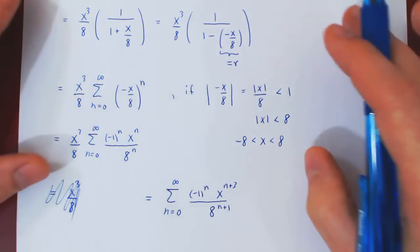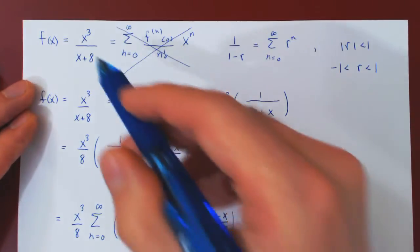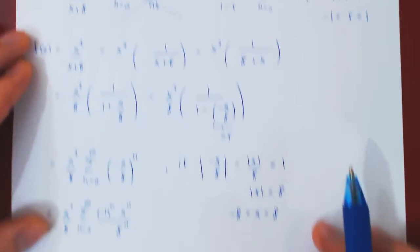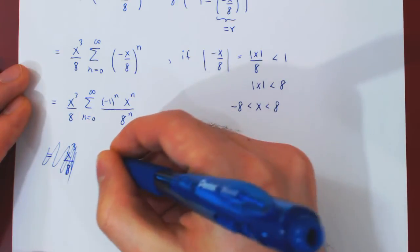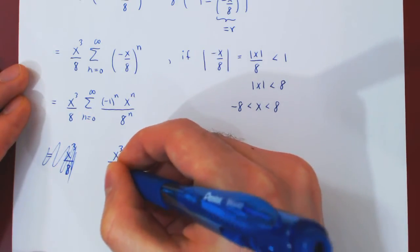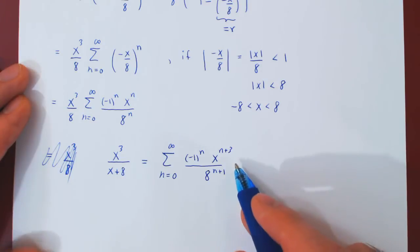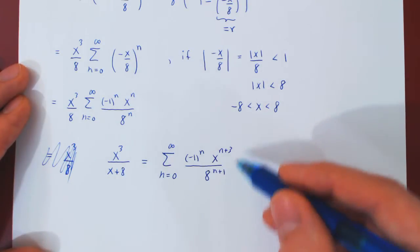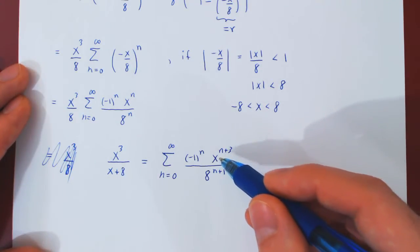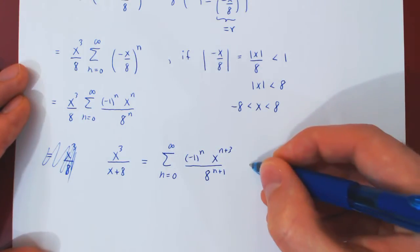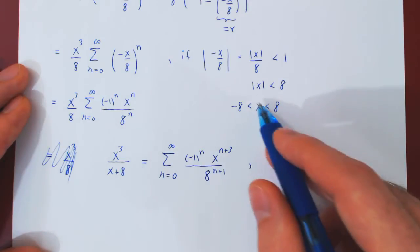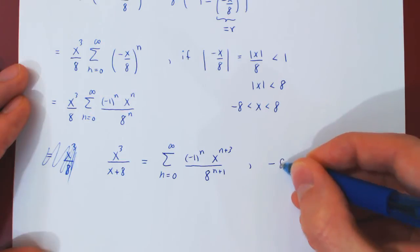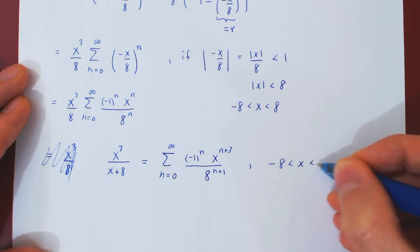If you recall, the original function, x cubed over x plus 8, is this series, and it is the Maclaurin series, as the center of the expansion is 0. This is x minus 0, all to the n plus 3. But this equality is not valid for all values of x, only when x lies strictly between negative 8 and positive 8.